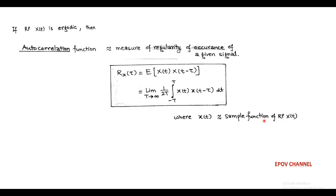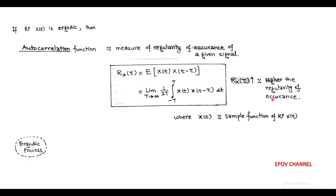As the autocorrelation function R_x(τ) increases, there is also increased regularity of occurrence of a given signal. The concept of ergodicity is very important because in practice we do not have a large number of sample functions for which ensemble averages could be computed. If the random process is found to be ergodic, then only one sample function is needed, through which we can compute ensemble averages in terms of time averages.